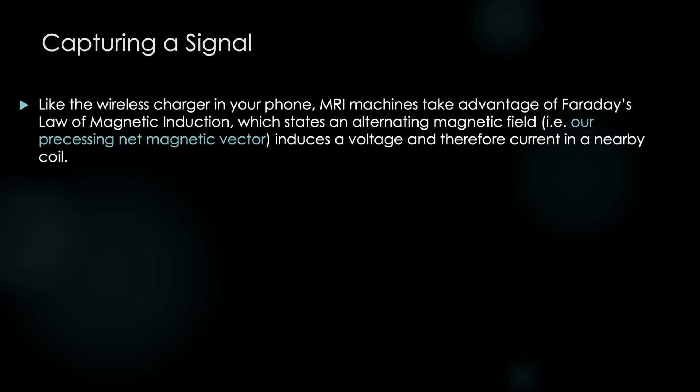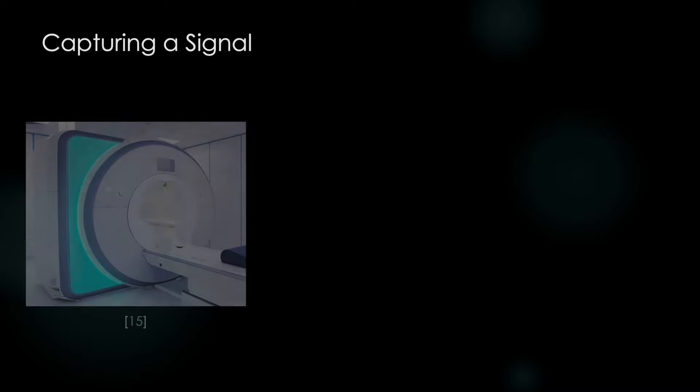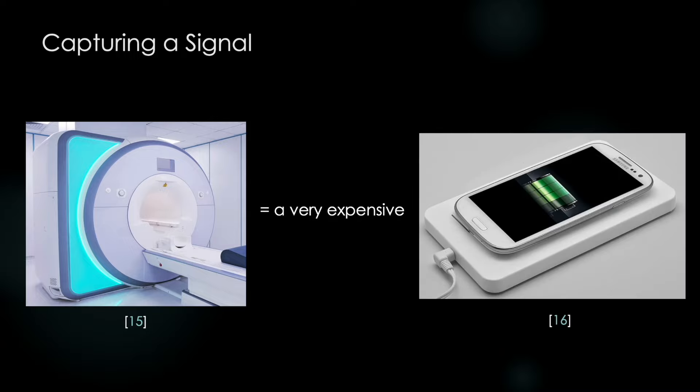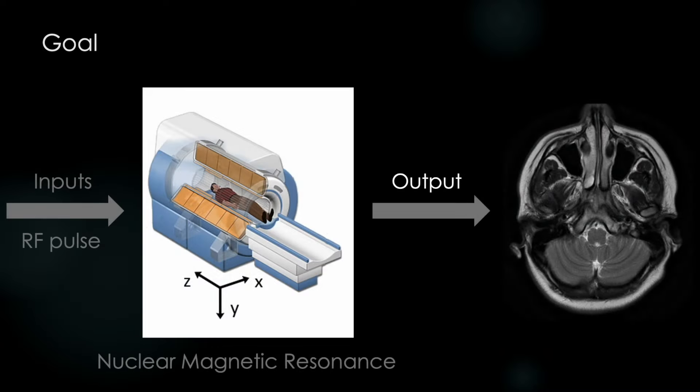So, as noted, amplitude and frequency change with increasing and decreasing B0. So this is kind of the aha moment. Like the wireless charger in your phone, MRI machines take advantage of Faraday's law of magnetic induction, which states an alternating magnetic field, in this case our precessing net magnetic vector, induces a voltage and thereby a current in a nearby coil. So this is a very expensive wireless phone charger. So let's think about it. What's going on inside your wireless phone charger? A current's going into the charging pad and then flowing in a circular coil. That creates a magnetic field perpendicular to the coil that increases and decreases as the current increases and decreases. And then that induces a current inside a coil inside your phone that charges your phone.